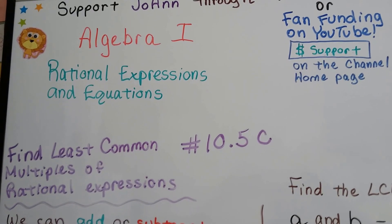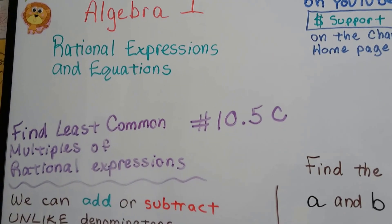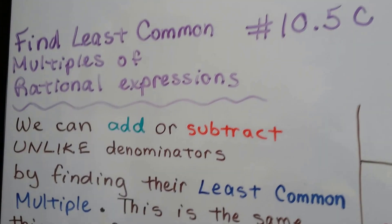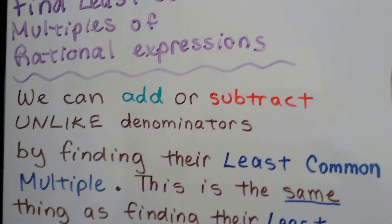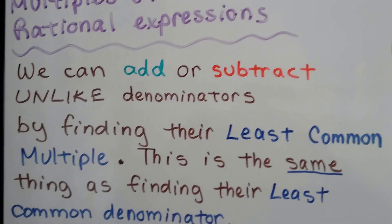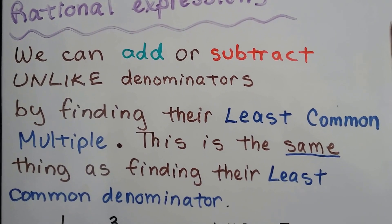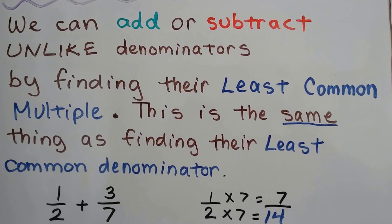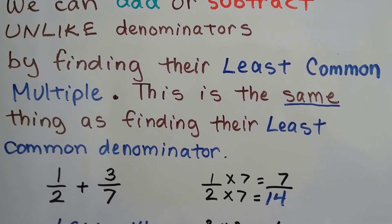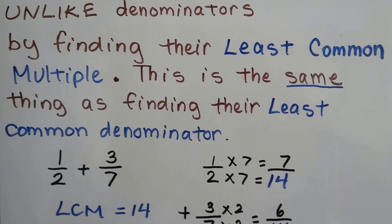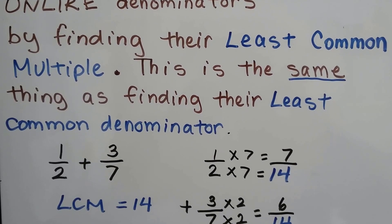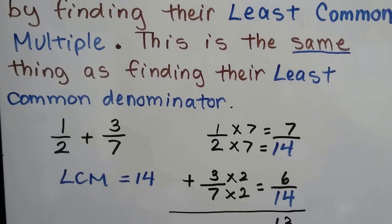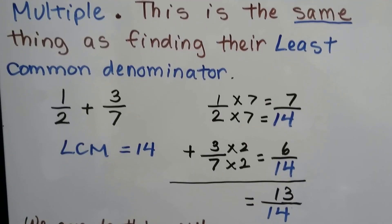Algebra 1, lesson 10.5c: Find the Least Common Multiples of Rational Expressions. Did you know we can add or subtract unlike denominators by finding their least common multiple? It's the same as finding their least common denominator.